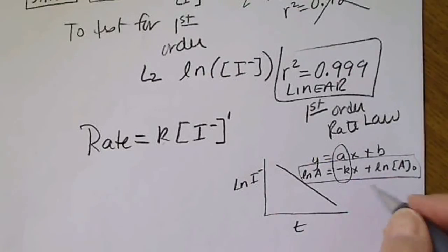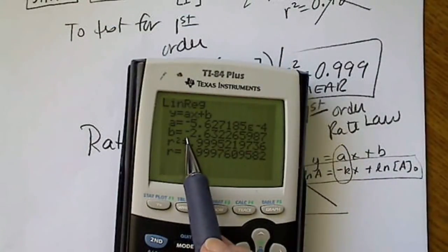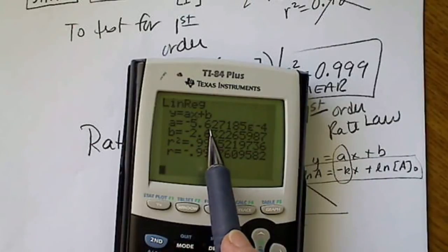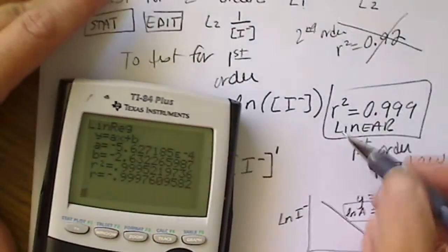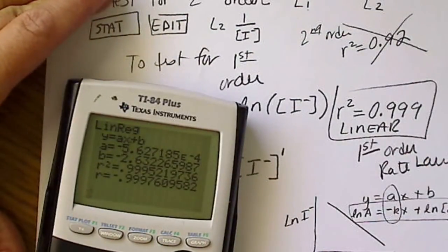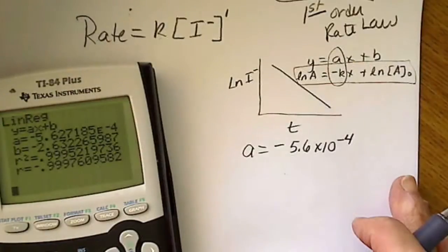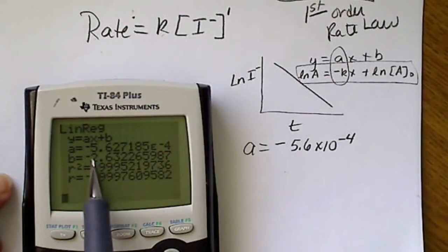So when I look on the calculator to get the equation of the line, here I see that the slope a is negative 5.6 times 10 to the minus 4. So I'm going to write that also. A equals negative 5.6 times 10 to the negative 4.